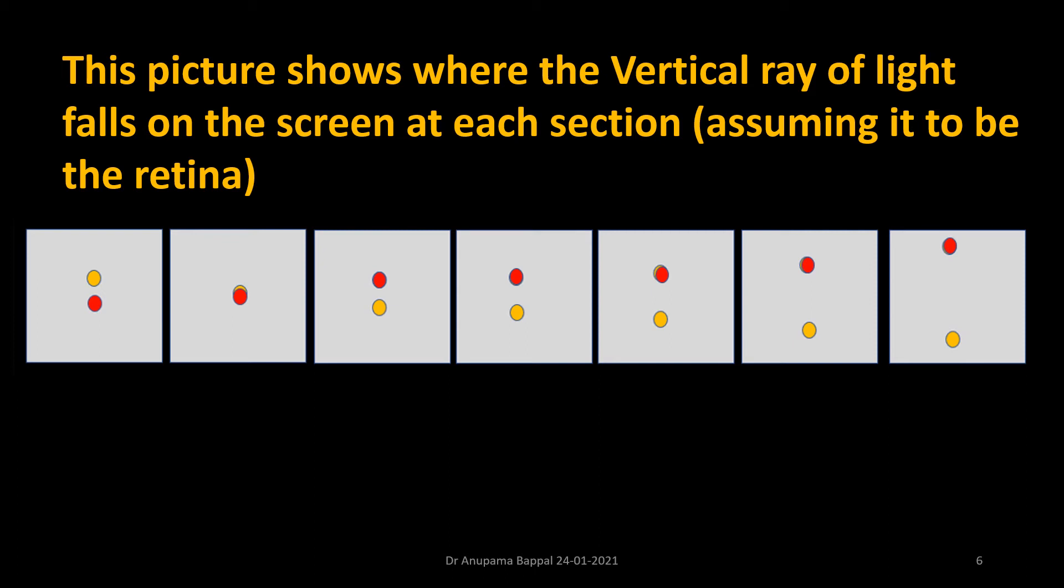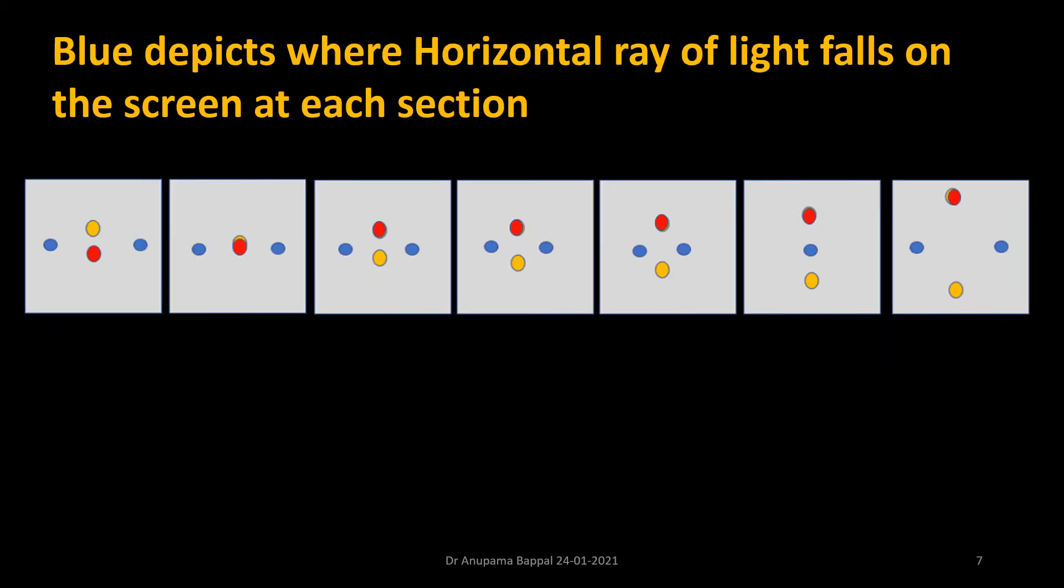So let's see how the horizontal ray of light behaves. This horizontal ray of light is far apart here, but it converges. It's coming closer here, it's come closer and it is converged at this point and then it starts diverging.